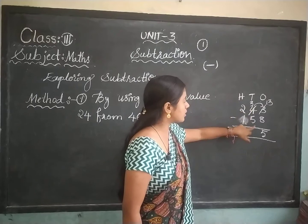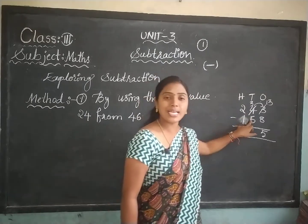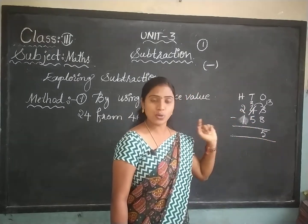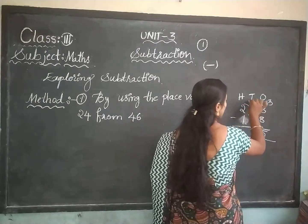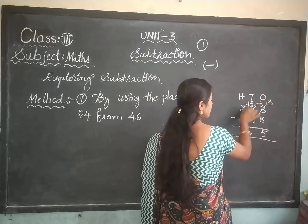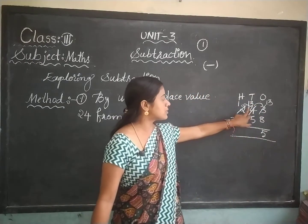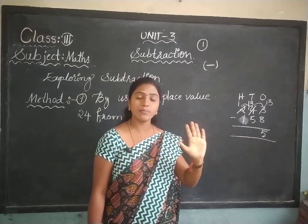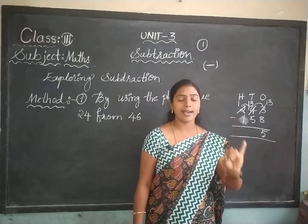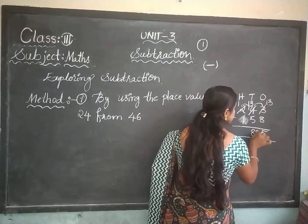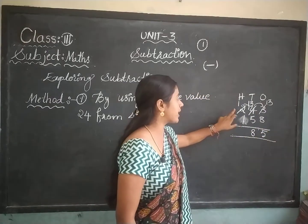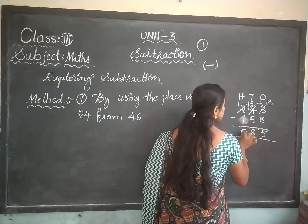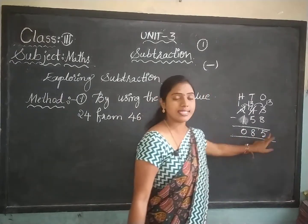Now the tens column. The digits here are 3 minus 5. We cannot subtract 3 minus 5 because 3 is a small number and 5 is a big number. So you have to take a borrow from the hundreds place. 3 becomes 13, and 2 becomes 1. Now subtract 13 minus 5: count 5 numbers before 13 — 12, 11, 10, 9, 8. Write 8 in the tens column. Now the hundreds column: 1 minus 1 equals 0. Write down 0. The answer is 85.